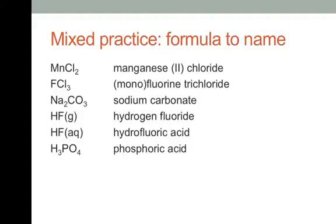Next example: we again have the phosphate ion, but now with a metal — so this is a metal salt with a polyatomic ion, a ternary salt. Iron is not in the first or second column, so we need to specify its charge. Since phosphate is 3−, and we have one of each, iron must be 3+. This is iron(III) phosphate.